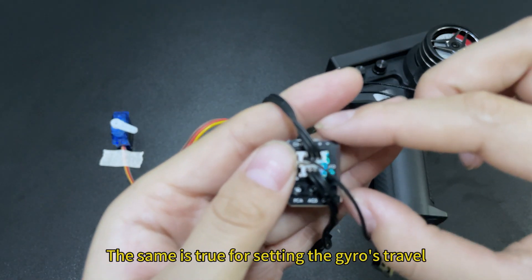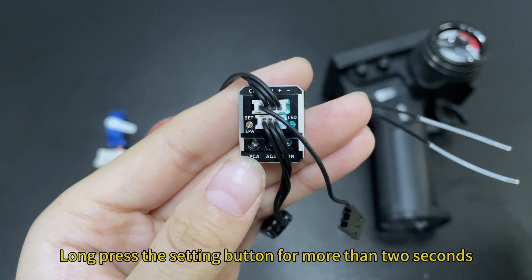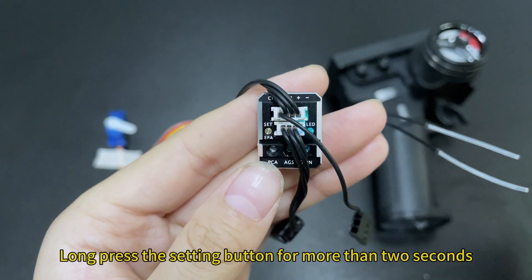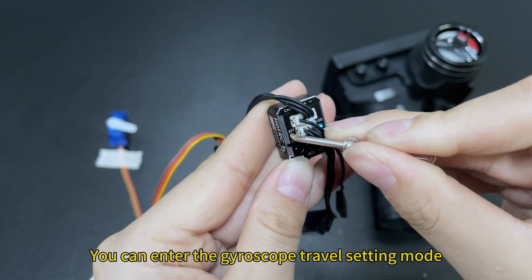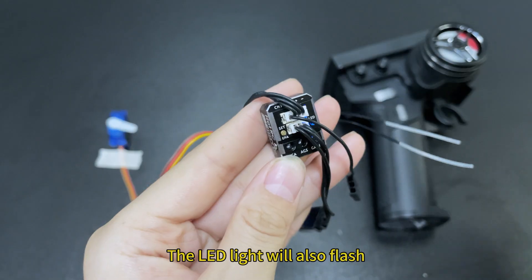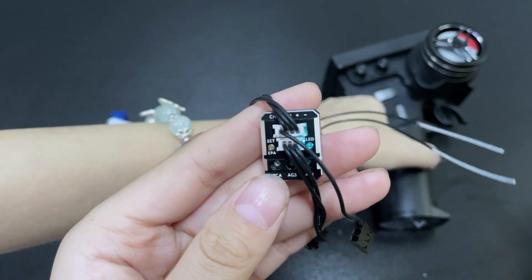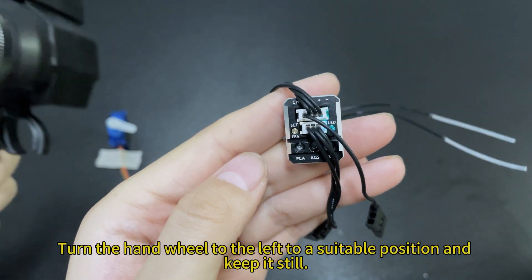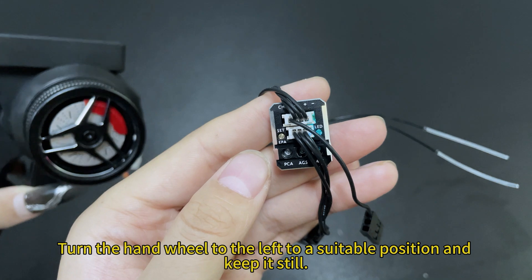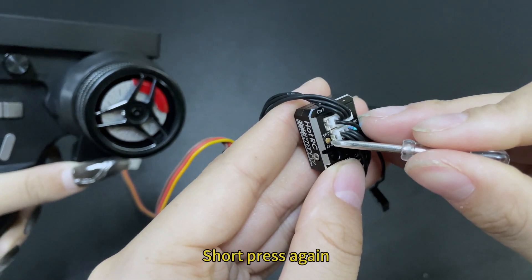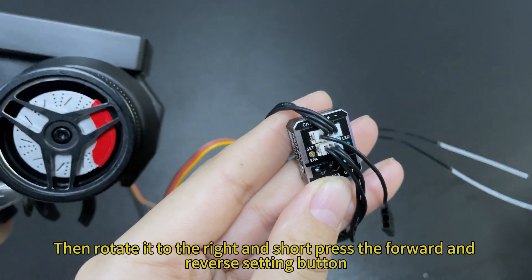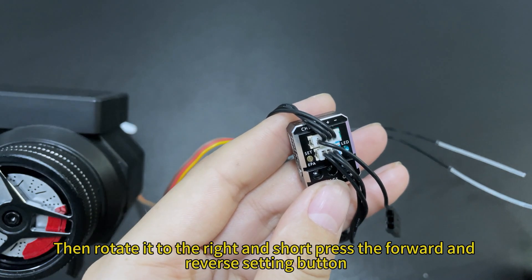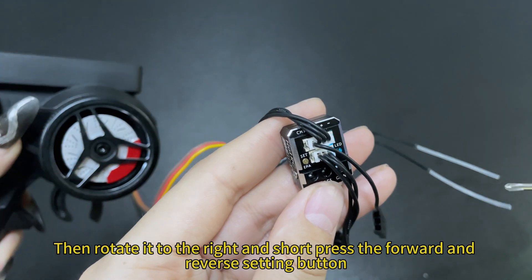The same is true for setting the gyros travel. Long press the setting button for more than 2 seconds. You can enter the gyroscope travel setting mode. The LED light will also flash. Turn the hand wheel to the left to a suitable position and keep it still. Short press again.